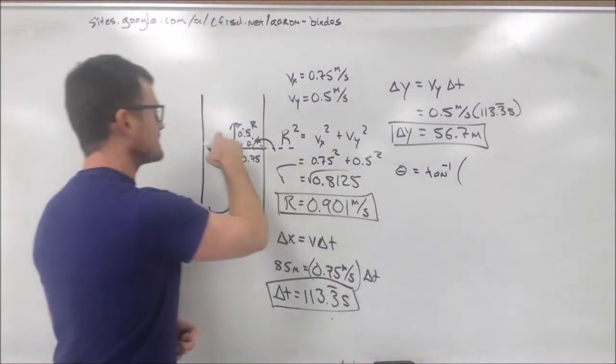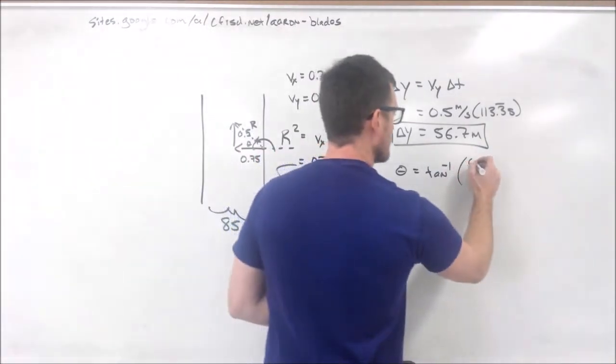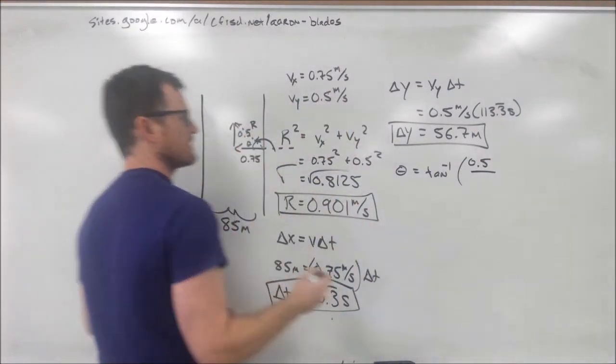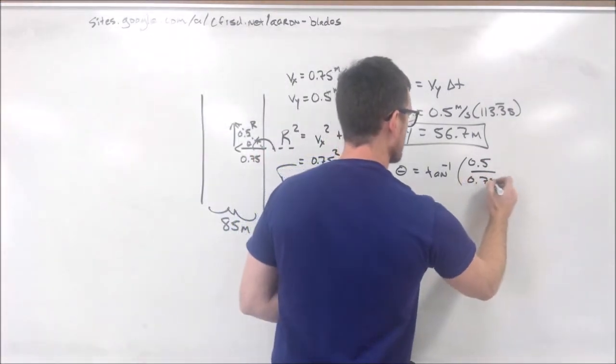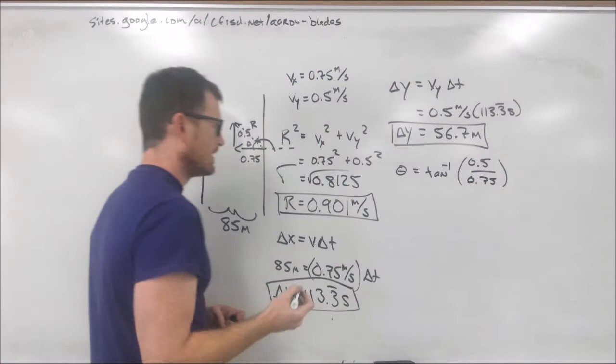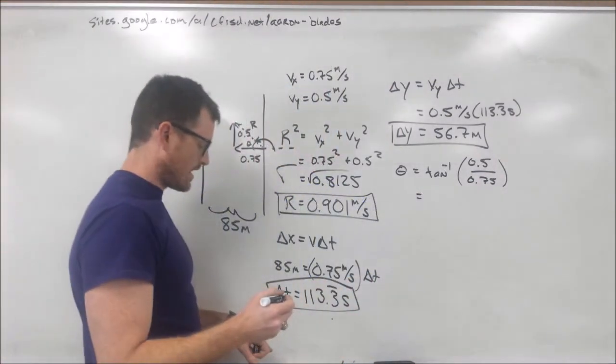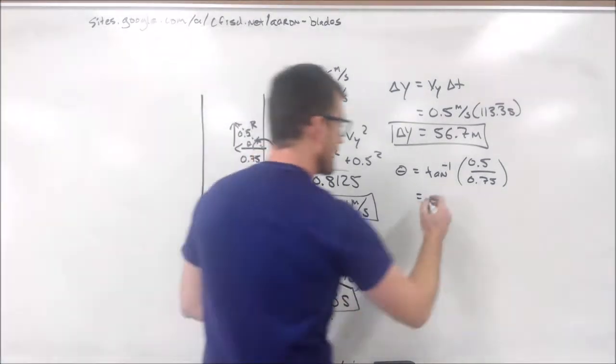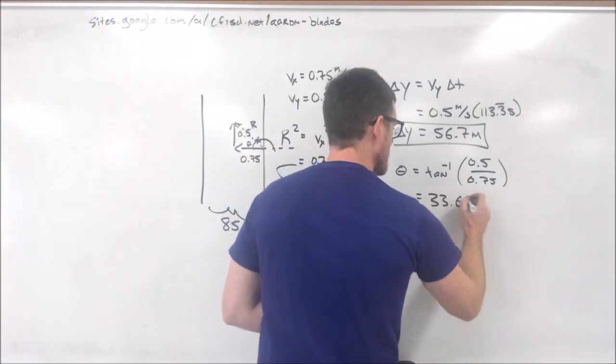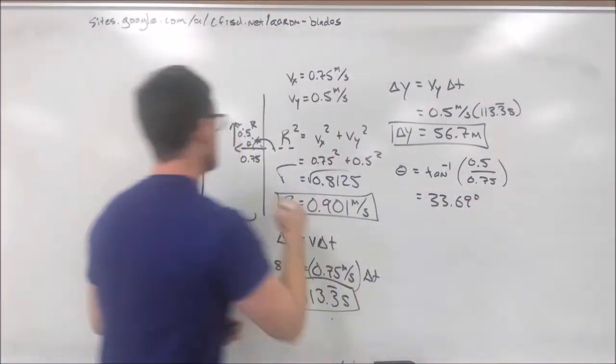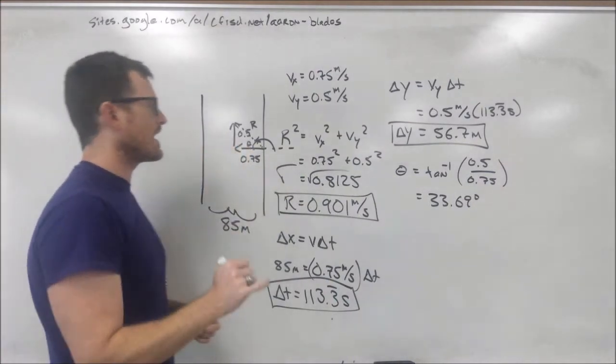To do that, we're going to use our arctangent of the opposite side, 0.5, divided by the adjacent side, 0.75. If we plug that into our calculator, making sure that our calculator is in degrees, the first thing that pops out is 33.69 degrees. Now, that's the angle right here inside this triangle.